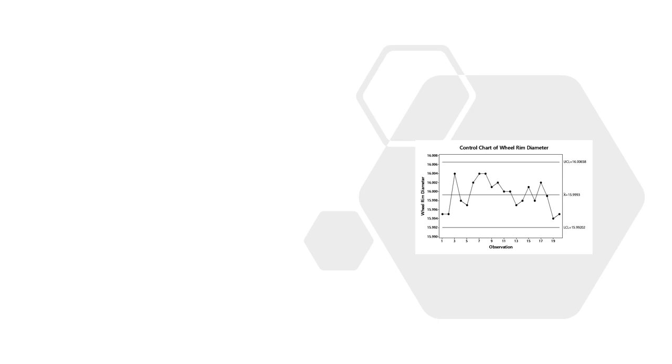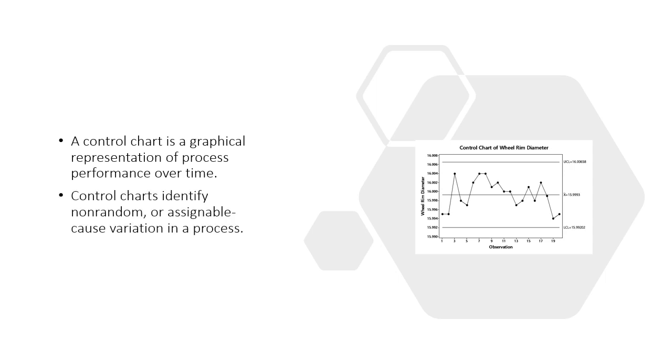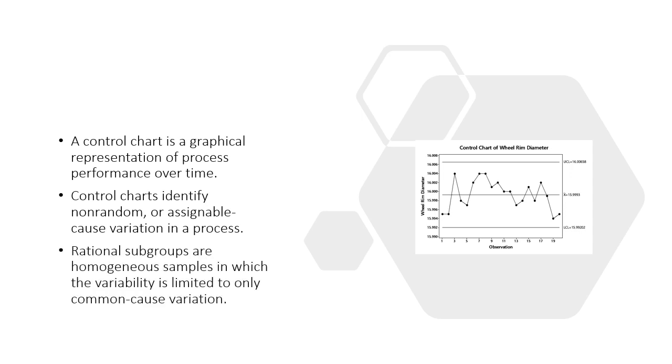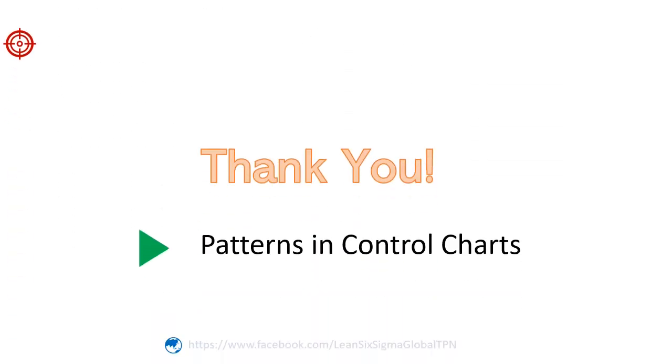As a review, a control chart is a graphical representation of a process over time. It identifies assignable cause variation in a process. To use control charts, we collect rational subgroups, which limit variability to the common cause variation in the process. Many control charts are available for process monitoring. In later sessions, we'll learn about how to choose the right control chart for our data and for the quality characteristics of interest. But first, let's learn about the patterns in control charts. Thank you for listening. In the next lesson, we'll talk about the patterns in control charts.